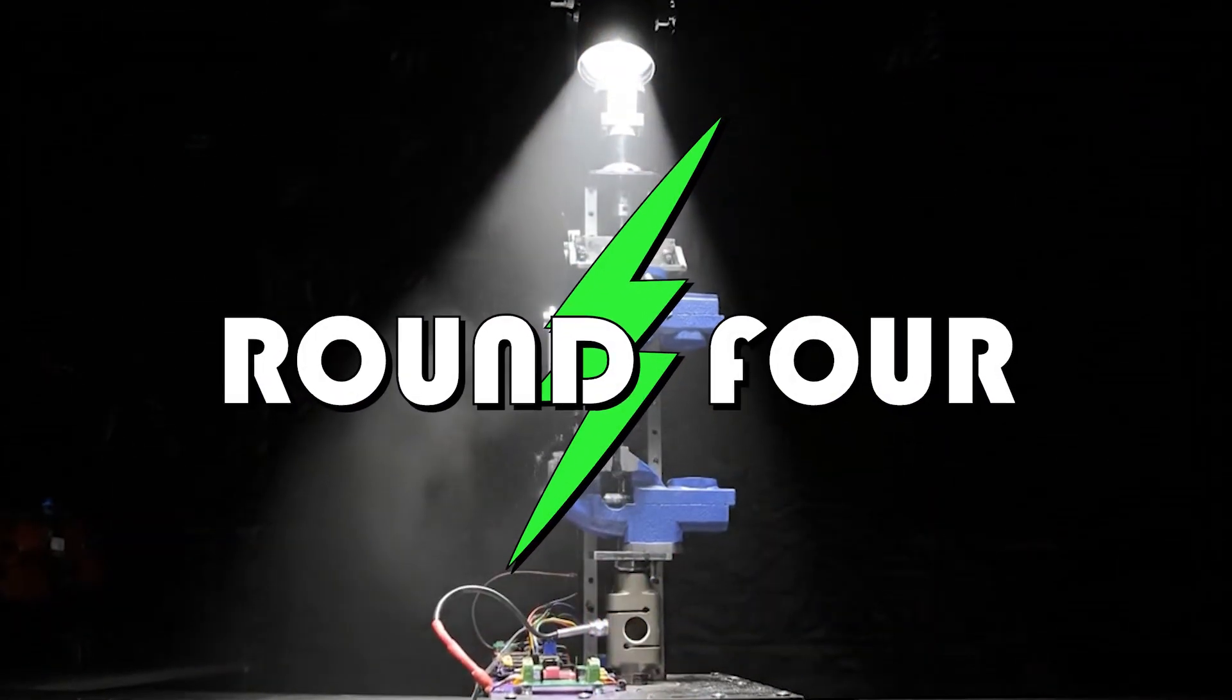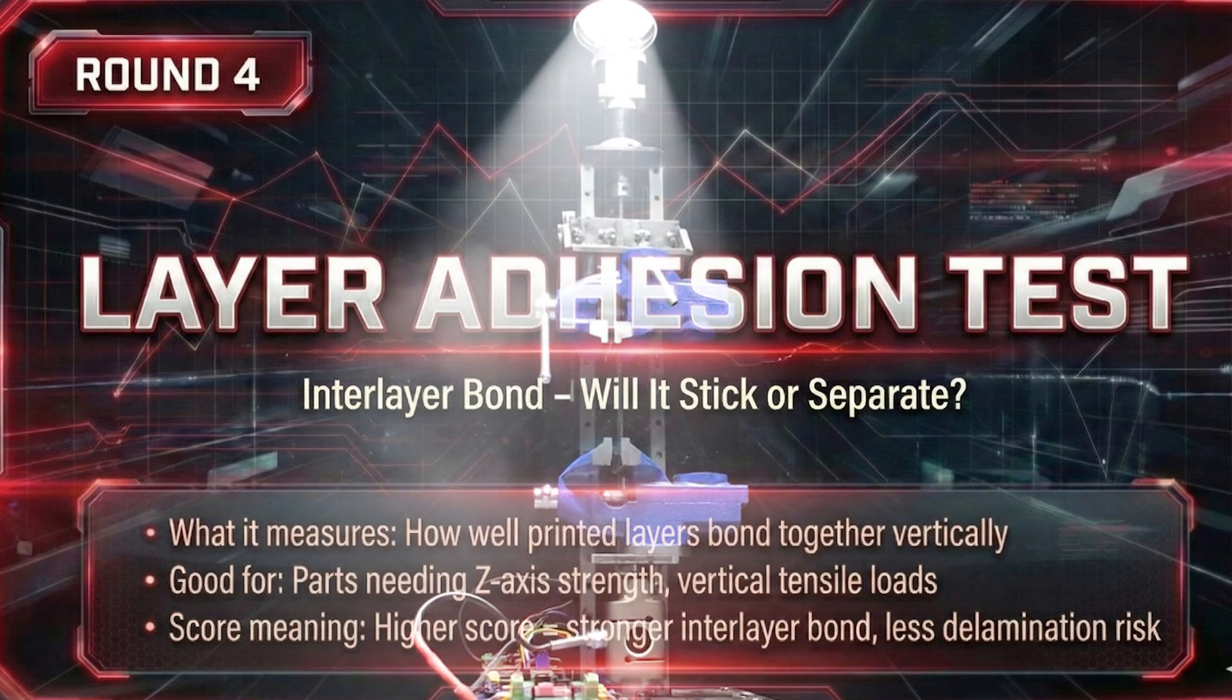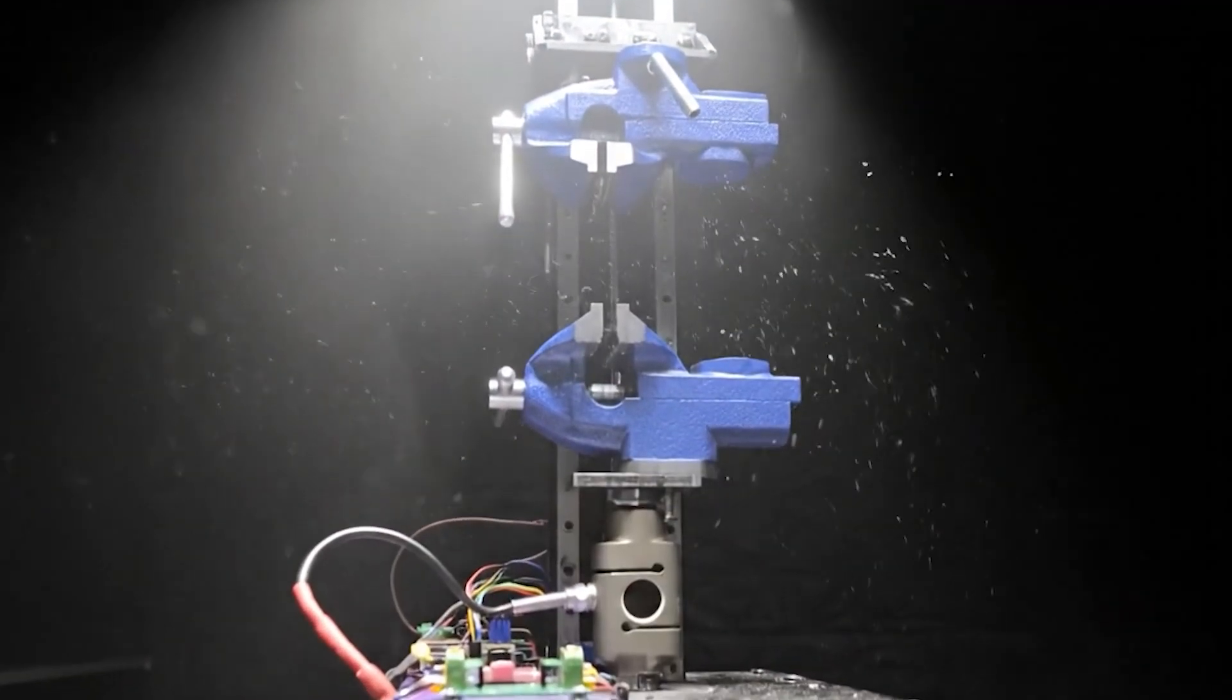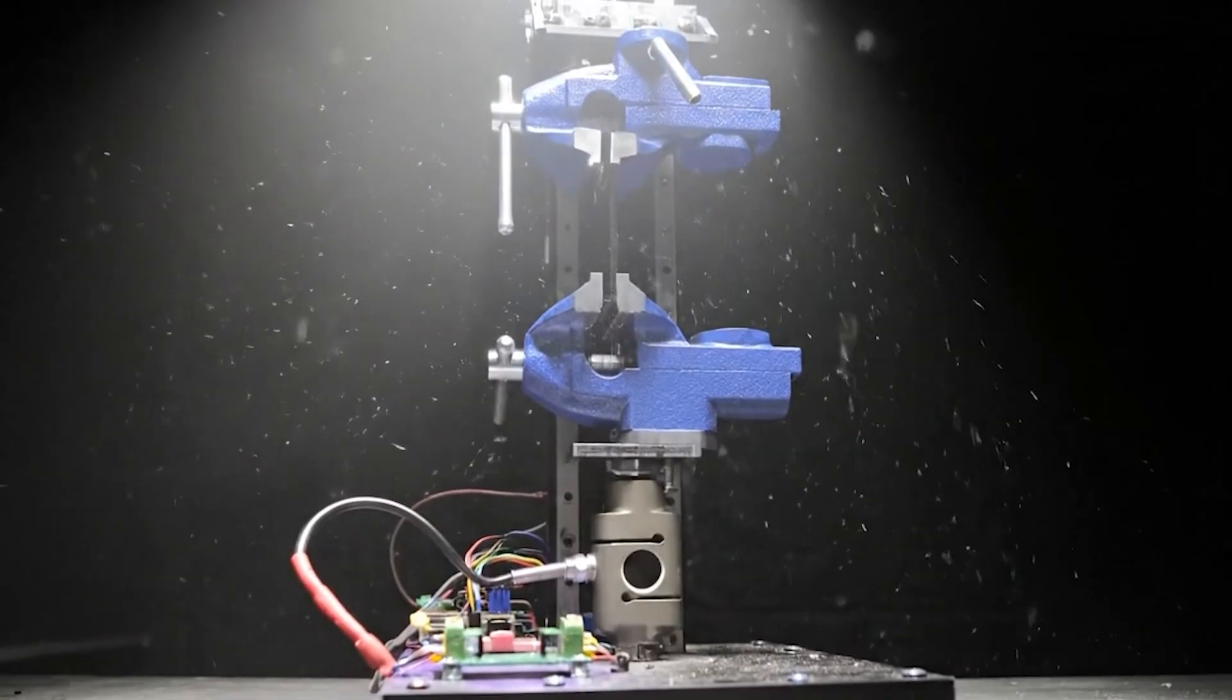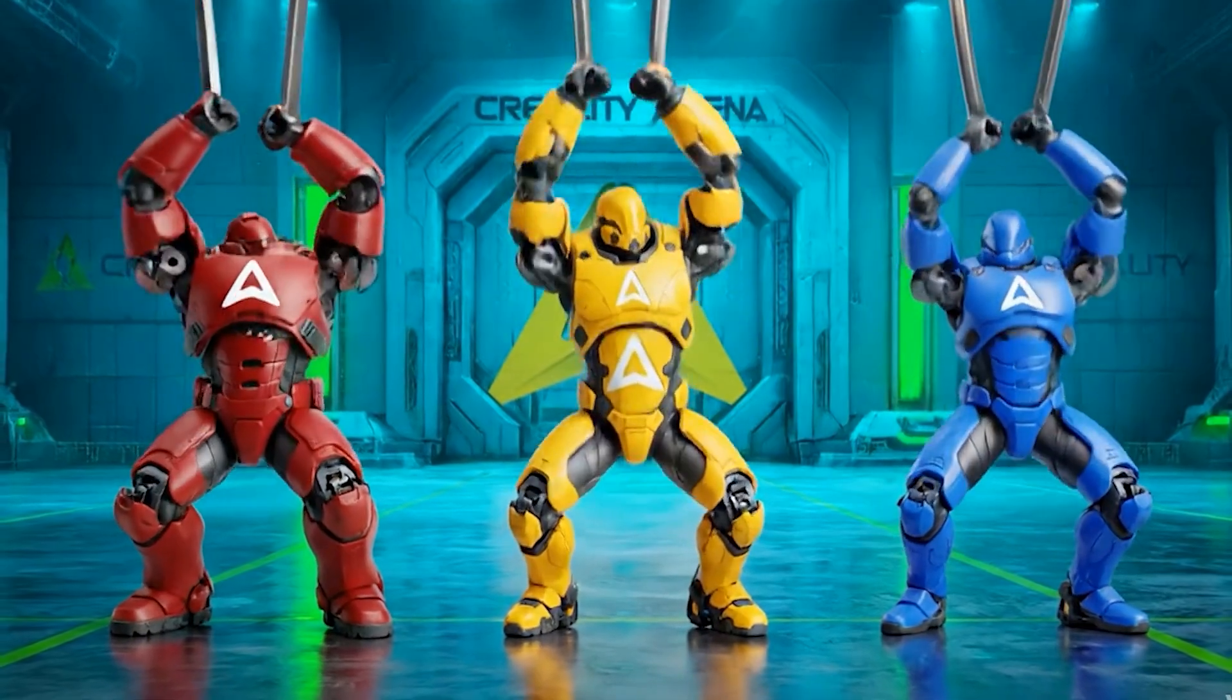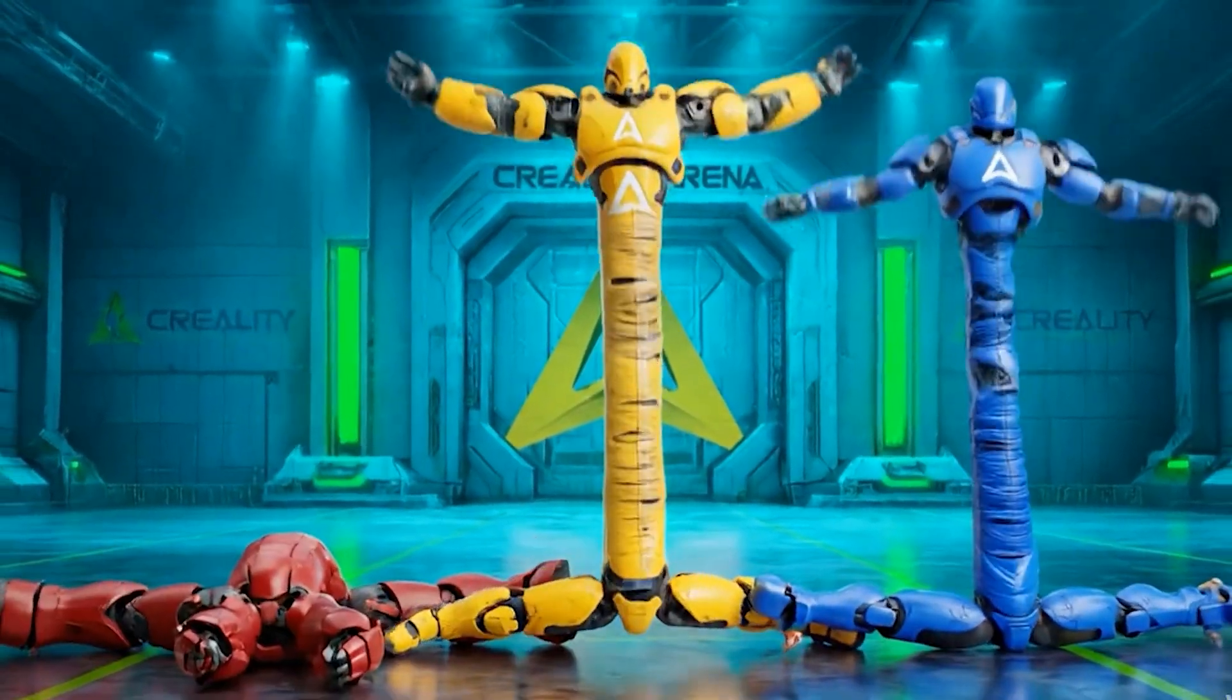And now, round 4, the layer adhesion test, the Z-axis. Here, we don't just measure strength, we measure love. How faithful are the layers? Do they hold on to each other with passion, or do they get a divorce at the first sign of trouble?